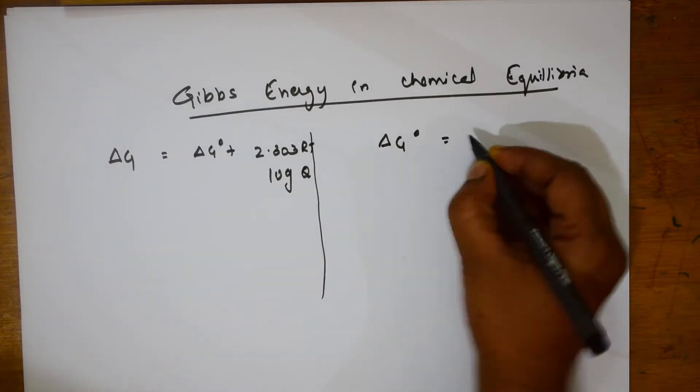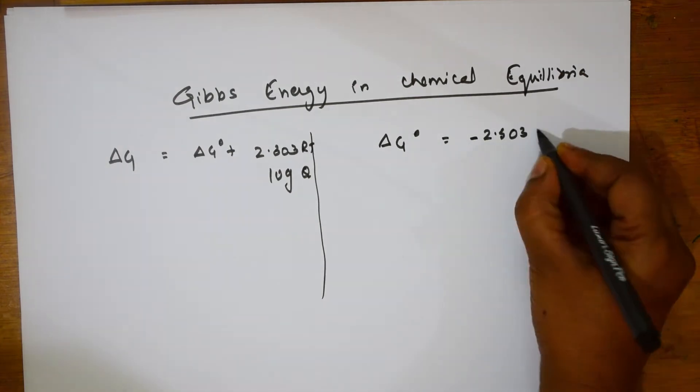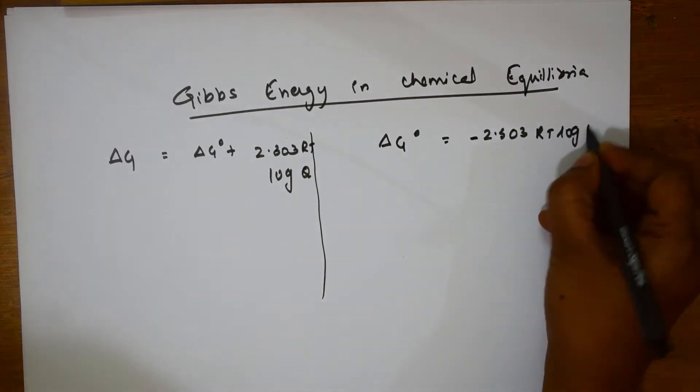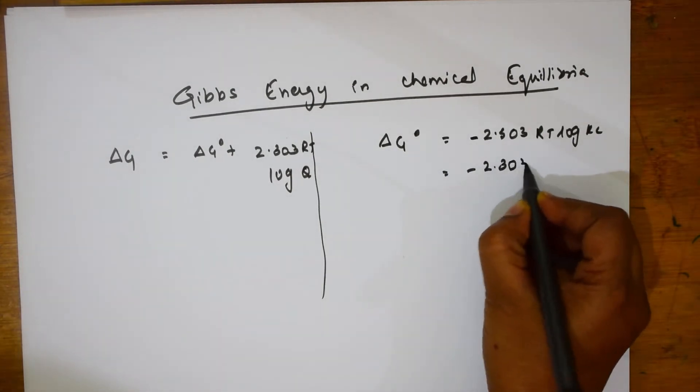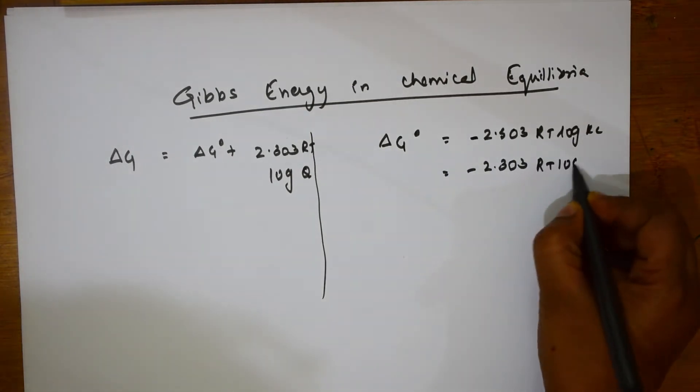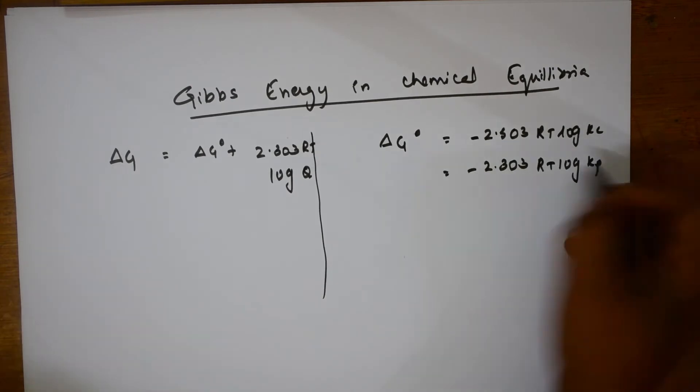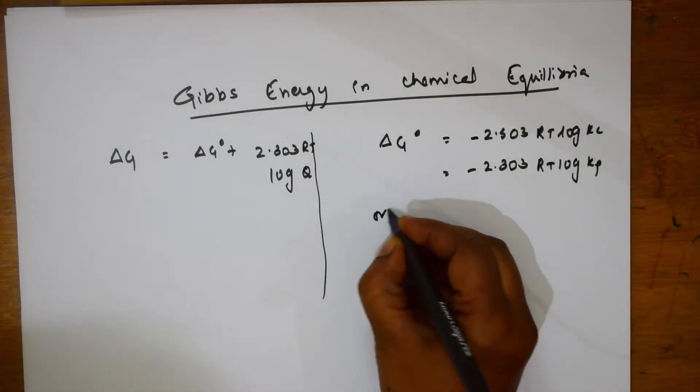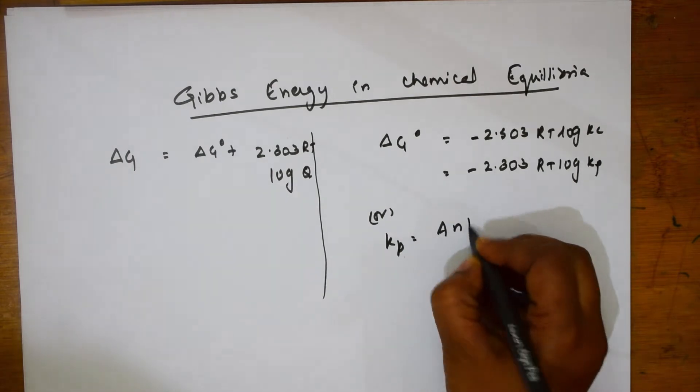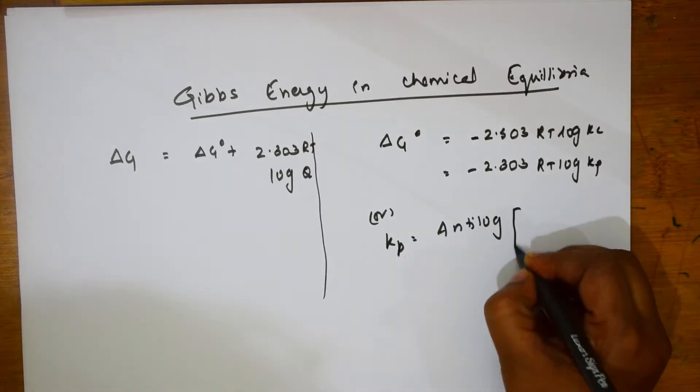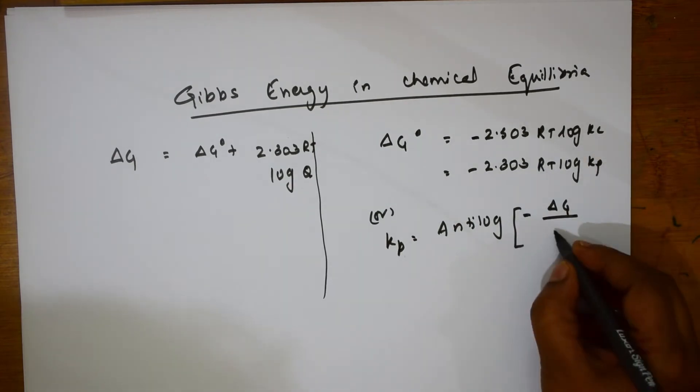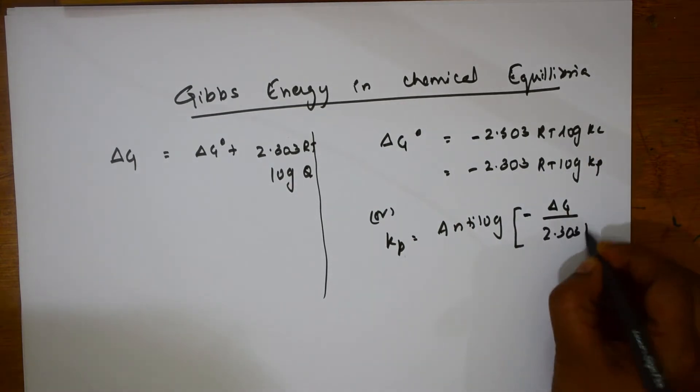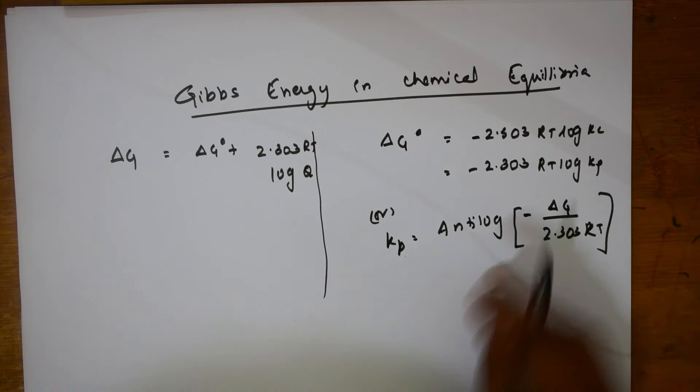Delta G naught equals minus 2.303 RT log Kc. I can also write this as 2.303 RT log Kp because we have the relation between Kc and Kp. Or I can write it as Kp equals antilog of minus Delta G by 2.303 RT. These are the formulas.